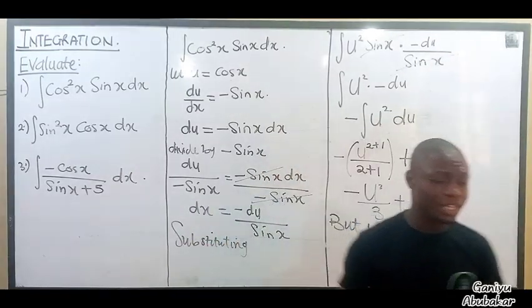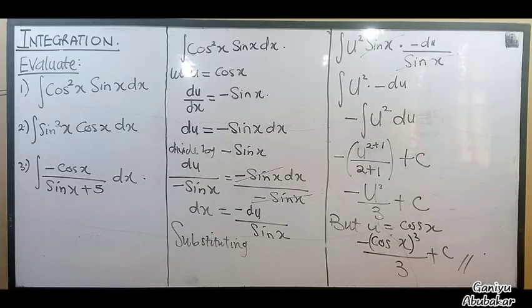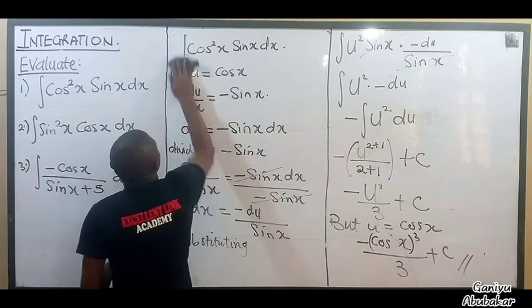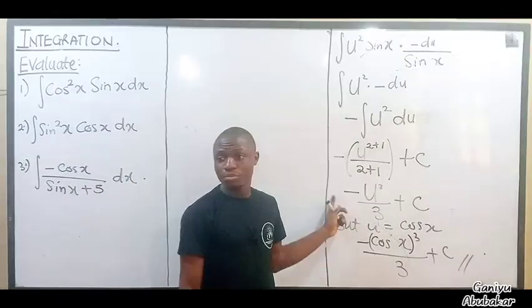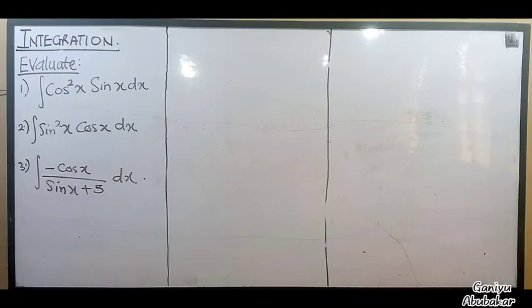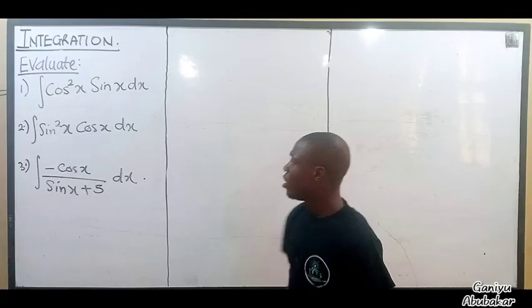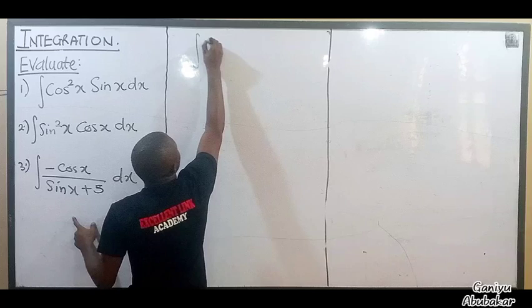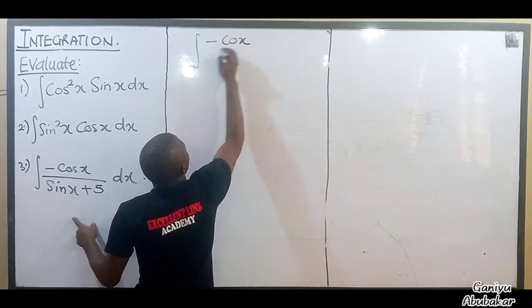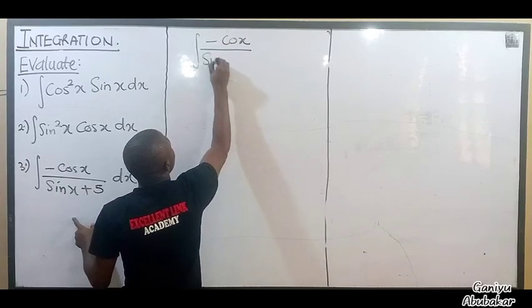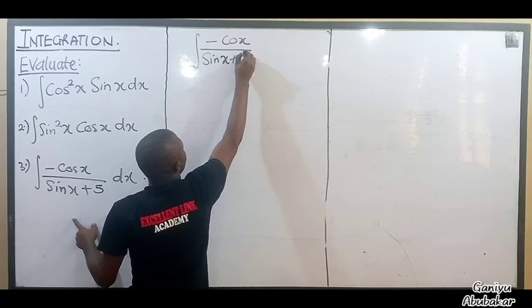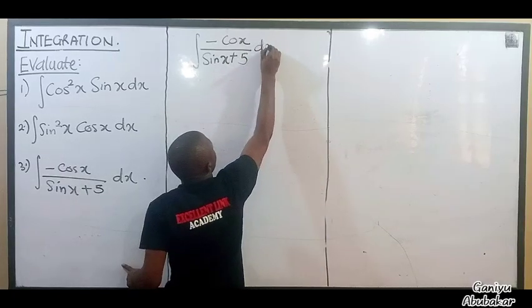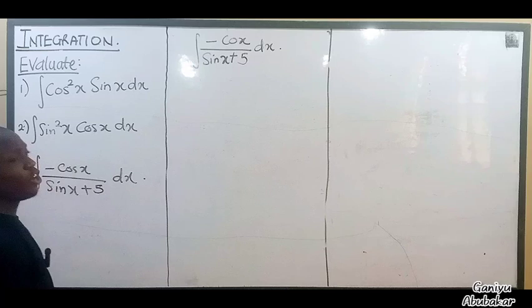Alright, let's do number 3. I have the integral of minus cos x all over sin x plus 5, times dx. So what would I make the value of u here?